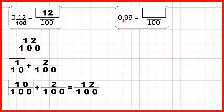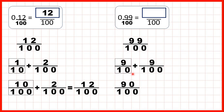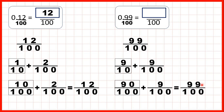Now we have 0.99, which is 99 hundredths. We have a number with two decimal places, and the second digit after the decimal point tells us how many hundredths we have, so we can draw a line across from the decimal point and write a denominator of 100. The first 9 stands for 9 tenths and the second 9 stands for 9 hundredths. That gives us 99 hundredths because 9 tenths equals 90 hundredths — 10 times 10 is 100 and 9 times 10 is 90 — and when we add the 9 hundredths to the 90 hundredths we get 99 hundredths.